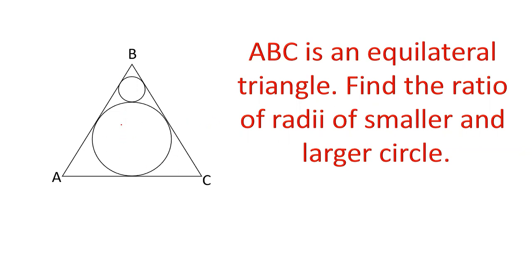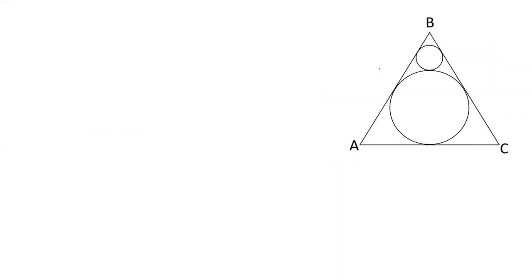There is a triangle ABC and there is a circle inside it which is an incircle, that is it is touching the three sides. Another circle is there which is touching this circle externally as well as two sides of the triangle internally. And we have to find out the ratio of the two circles. Now let us see how to solve this.